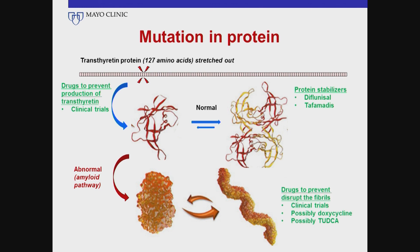Another approach is using drugs that disrupt the amyloid itself. There are antibodies in clinical trials that try to destabilize or disaggregate pieces of the amyloid so it can be removed from tissues more easily. There is also a question of whether doxycycline or a supplement called TUDCA may be of some value in disrupting the fibrils. And that is what I have to share with you today. Thank you for your time.